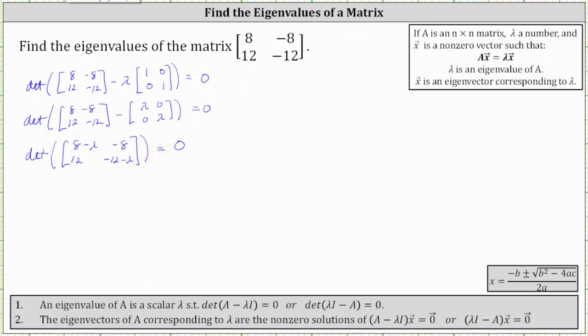Next we find the determinant, which equals the product of (8 - λ) and (-12 - λ) minus the product of -8 and 12.